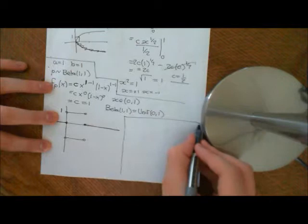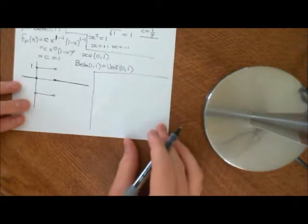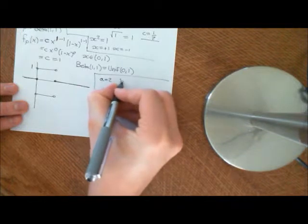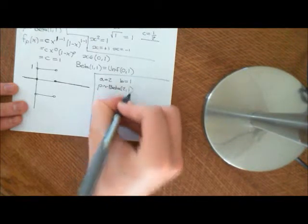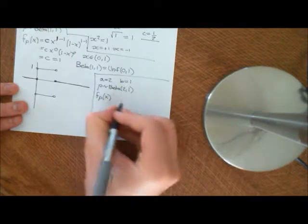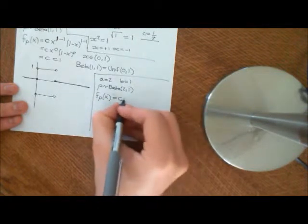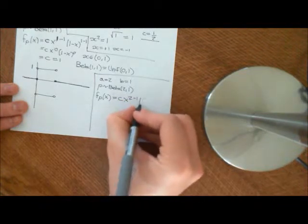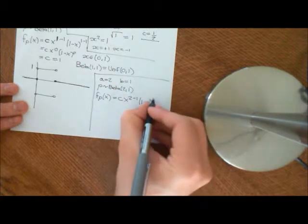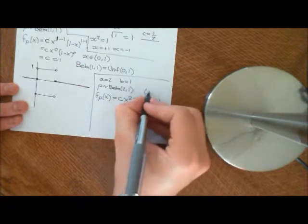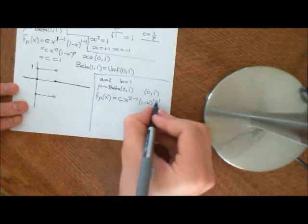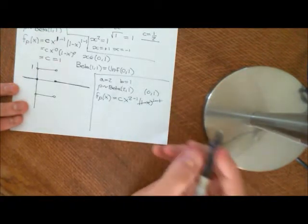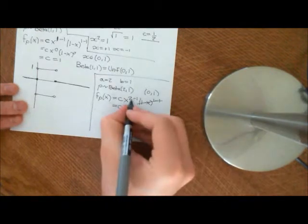So let's see another example now. Another important example is a equals 2 and b equals 1. So p is Beta distributed (2,1). Let's work out what the probability density function on the interval (0,1) is. It's going to be some normalising constant times x to the power of a minus 1, so x to the power of 2 minus 1, times 1 minus x to the power of b minus 1, which is 1 minus 1. Because we're working on the open interval 0 to 1, any number plugged in will give a non-zero number to the power of 0, which goes to 1. So we can omit that, and we get c times x, because 2 minus 1 is 1.